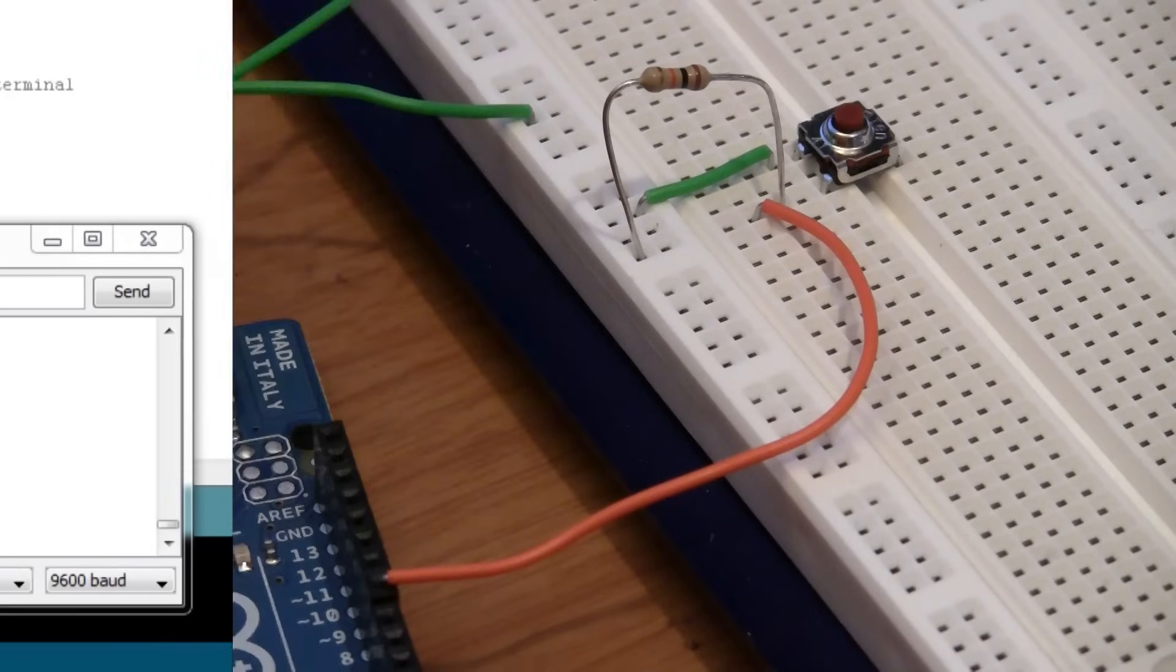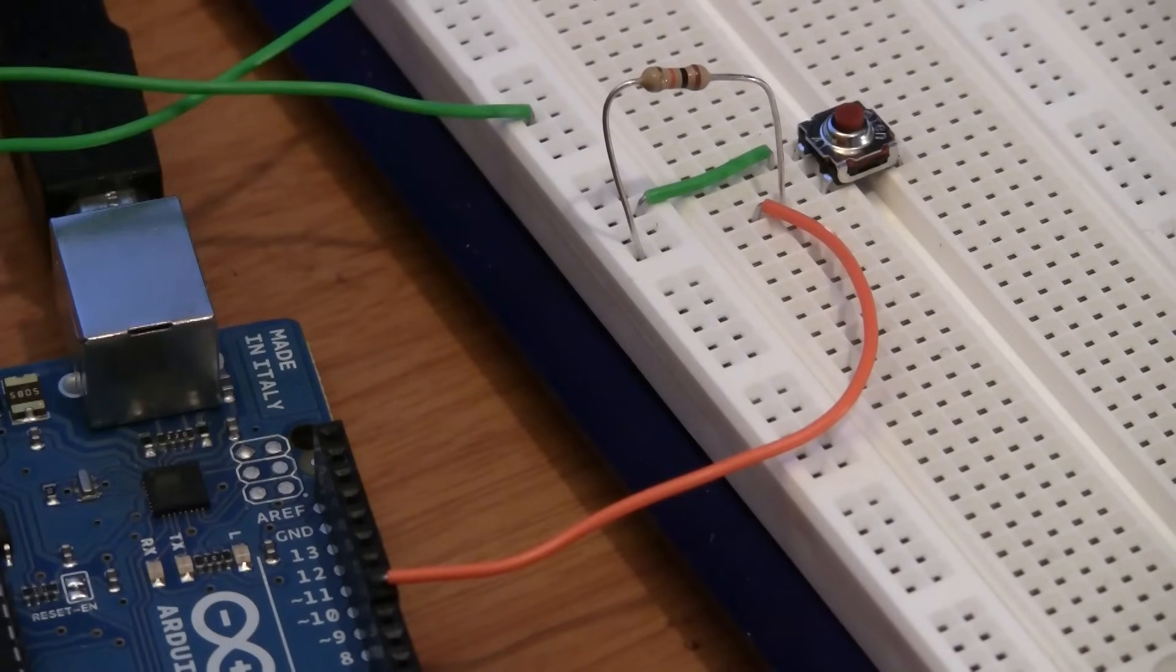Pull-up resistors work in a very similar fashion, except they pull it up to 5 volts as a default instead of to ground. We can do that too if we wanted to.